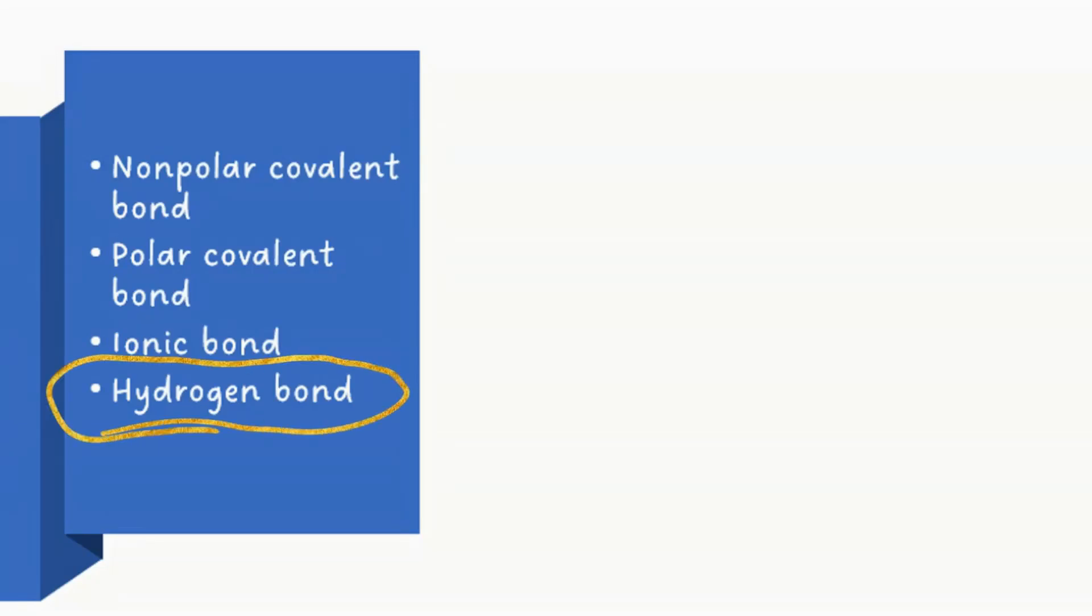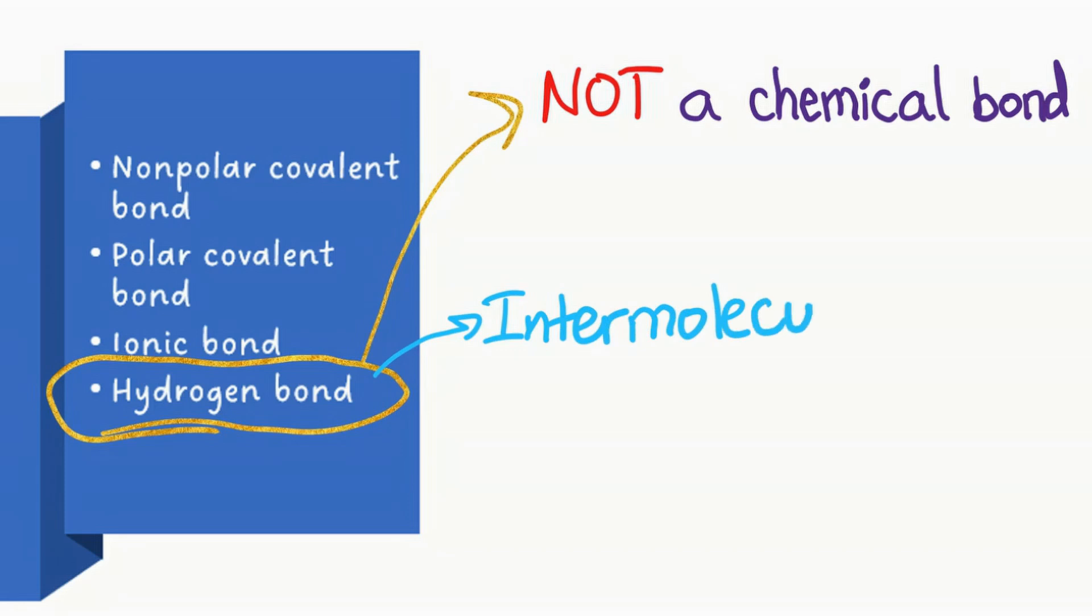Now hydrogen bonds are special and entirely different from the other three bonds we just discussed. Hydrogen bonds are not a chemical bond at all. They are what we call an intermolecular force.